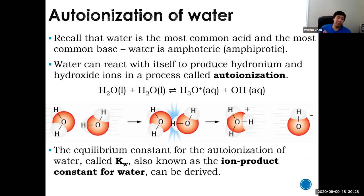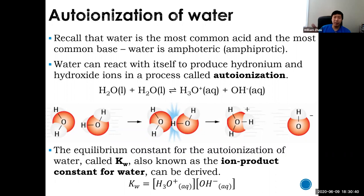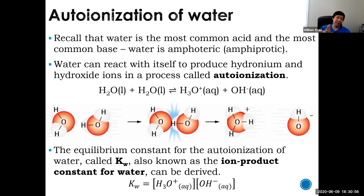There is an equilibrium constant for this called Kw — the ion product constant for water. Same as all the other K's: products divided by reactants. Products are hydronium and hydroxide concentration. The reactant liquid waters don't count because they're liquids, so we exclude them. It is simply the concentration of hydronium times the concentration of hydroxide.